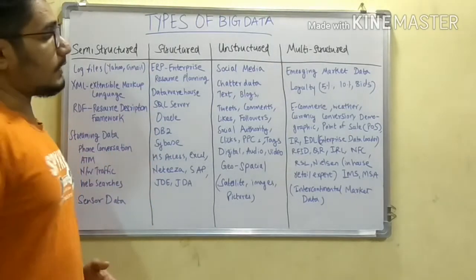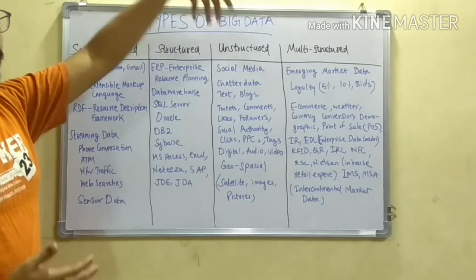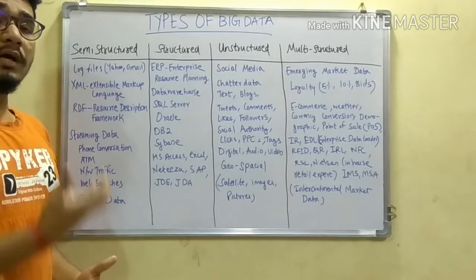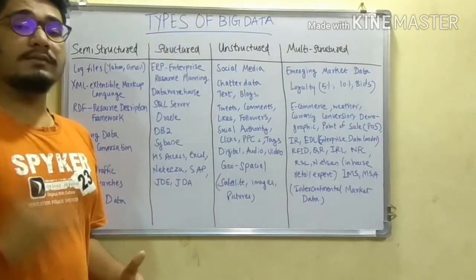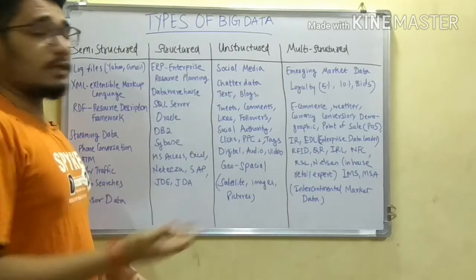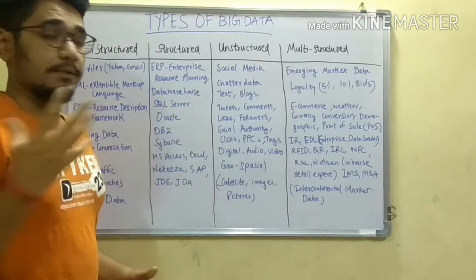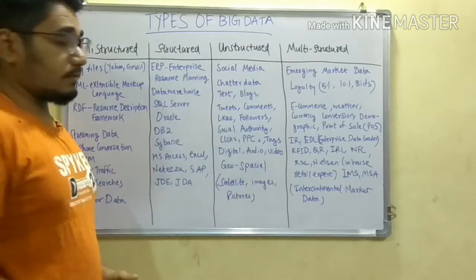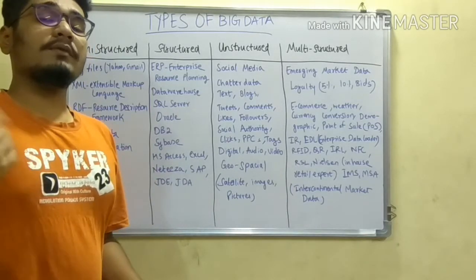Next is unstructured data, which consists of social media. Unstructured data contributes the major portion of big data — about 80 to 85 percent. It includes data from social media platforms like Facebook, Twitter, YouTube, LinkedIn, and Google. This covers chatter data, chats on Facebook and WhatsApp, text, blogs, tweets, comments, likes, followers, subscriptions, and social authority clicks.